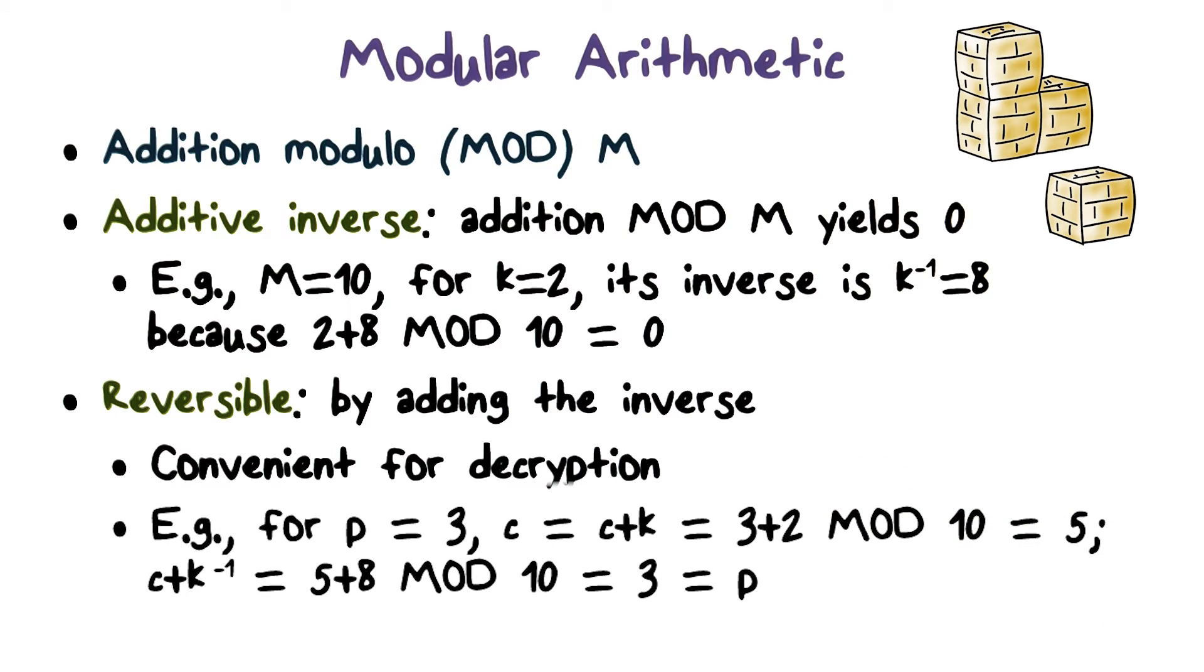For example, given plaintext p = 3, suppose the key k = 2. The way we encrypt the plaintext p is to add the key under modular addition to plaintext p, and the result is ciphertext c. So c = p + k, which is 3 + 2 mod 10. The result is 5. That is, the ciphertext c of plaintext p = 3 is 5.